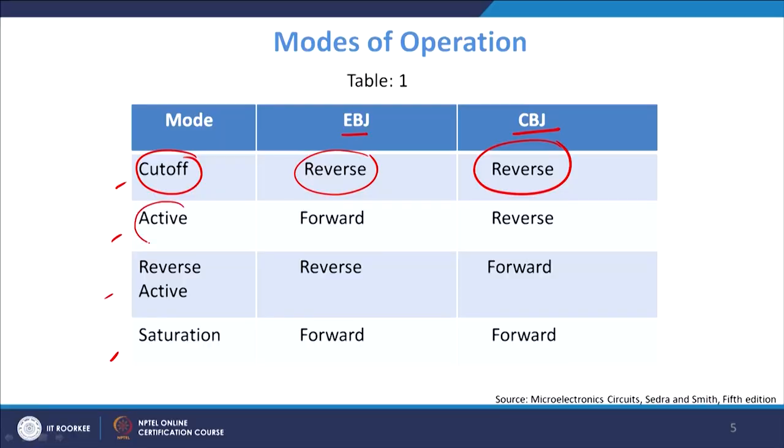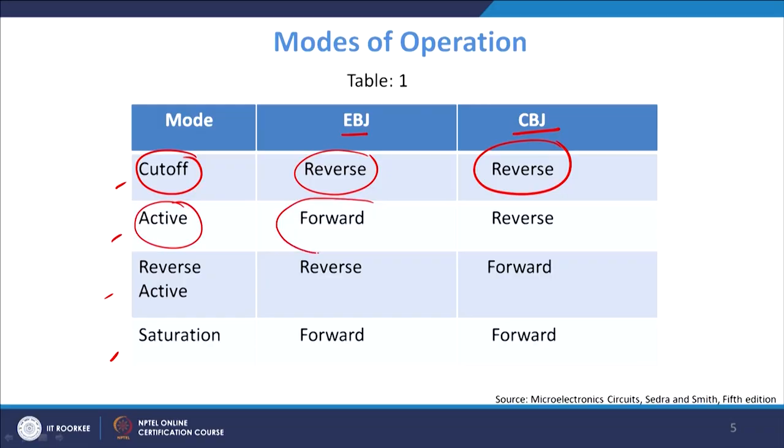The second mode is the active mode of operation — the most commonly used mode, generally used in amplifiers. Here the emitter-base junction is forward biased and the base-collector junction is reverse biased. When EBJ is forward biased, a large number of emitter free charge carriers (electrons) are allowed to enter the base and be collected. In the active region, EBJ is always forward biased and collector-base is always reverse biased.